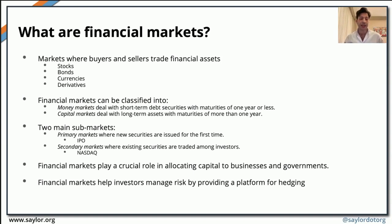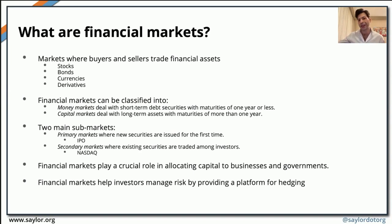We have money markets and capital markets. Money markets are dedicated to trading short-term debt securities that have a maturity of around one year or even less than a year. Capital markets, on the other hand, are mostly long-term — they trade with maturities longer than one year. Anything above one year goes directly into capital markets, while anything a year or less is considered a money market. When we talk about money markets and capital markets, we'll focus now on capital markets.